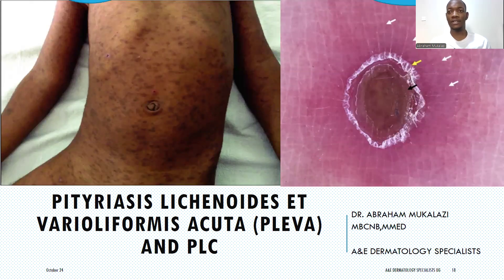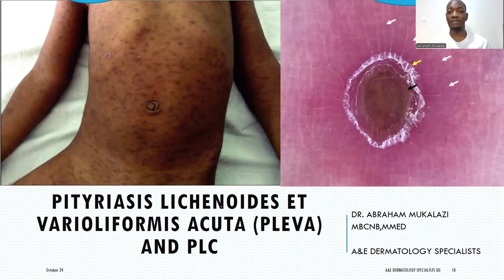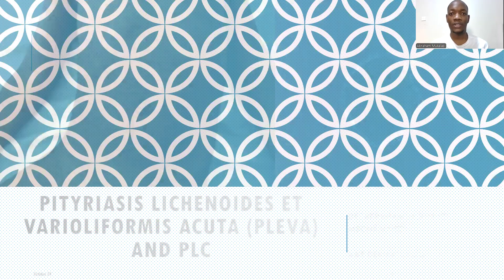Hello everyone. Someone wanted me to talk about PLEVA and PLC, so this video was made specially for you, so that you get to understand the difference between pityriasis lichenoides et varioliformis acuta — PLEVA — and pityriasis lichenoides chronica, PLC. This entity covers two disease processes that are on the same spectrum, and it is very important to understand the difference between the two and how to diagnose either of these conditions. I'm Dr. Abraham, and I encourage you to subscribe to this channel for more dermatology-related content.